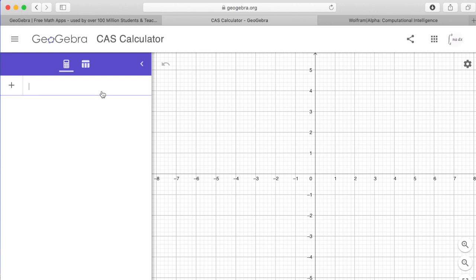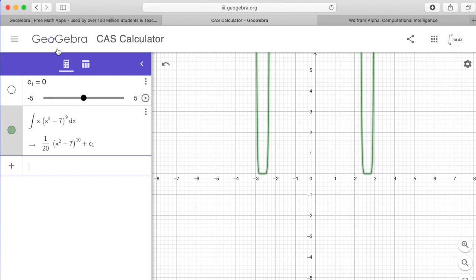And then once you are in the CAS calculator, you can type in integral x times x squared minus 7, and this is to the ninth power. And that will work out a nice integral for you.